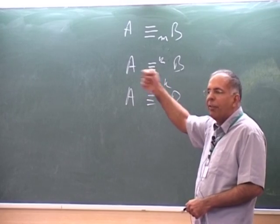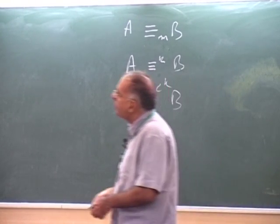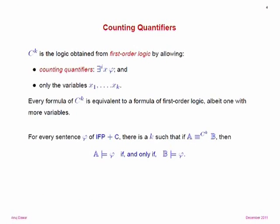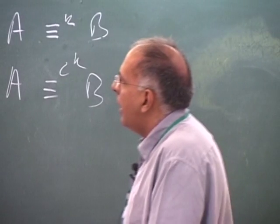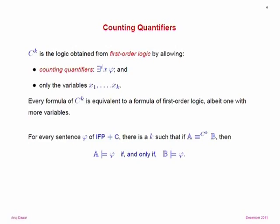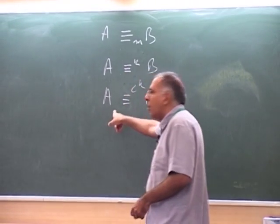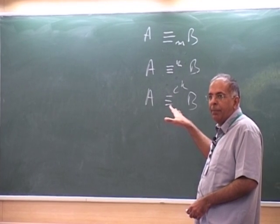You can prove—by essentially the same method sketched yesterday for IFP—that for any formula of fixed-point logic with counting, there is a K such that if A and B are C^K-equivalent, they're not distinguished by that formula. You unfold the fixed points up to the bound given by the size of the structure, and counting terms unfold into counting quantifiers; the total number of variables needed is bounded by about twice the number in the original formula. So to prove something is not definable in fixed-point with counting, we just need to show it's not invariant under this equivalence for any value of K.